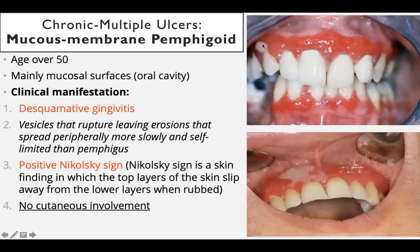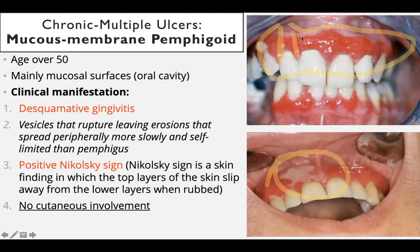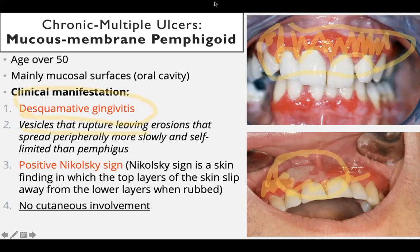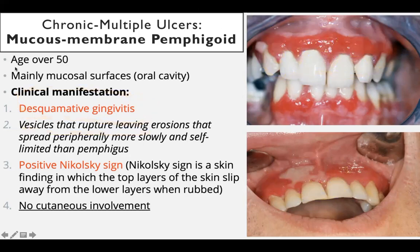Mucous membrane pemphigoid — looking at the oral cavity, not only the marginal gingiva but the whole gingiva is involved. The margins are not spared; the whole gingiva is inflamed. This is desquamative gingivitis. We have vesicles that rupture leaving erosions. The first notable feature is age over 50.